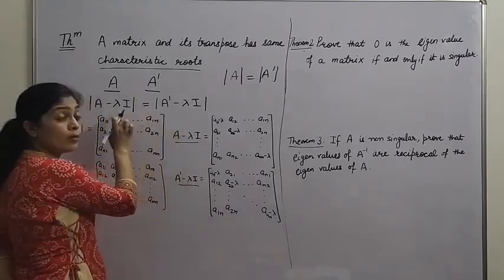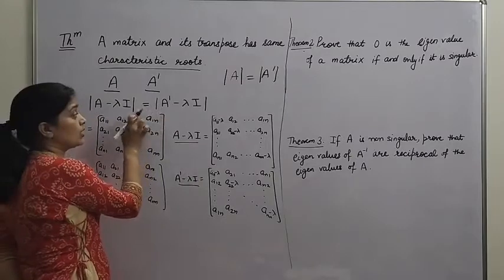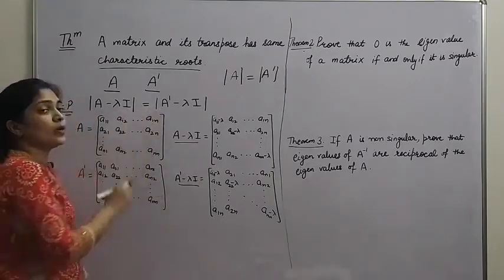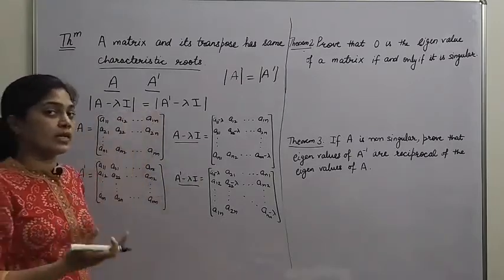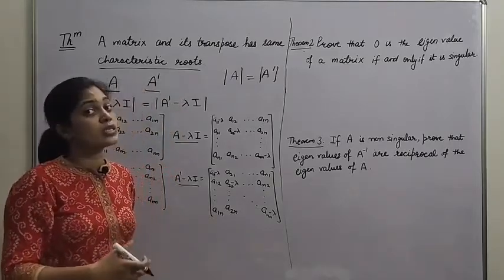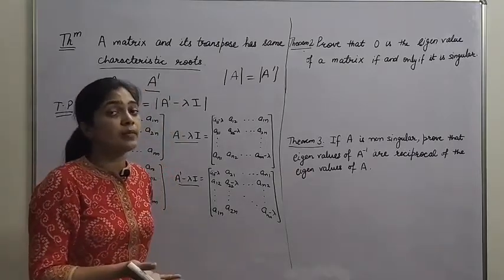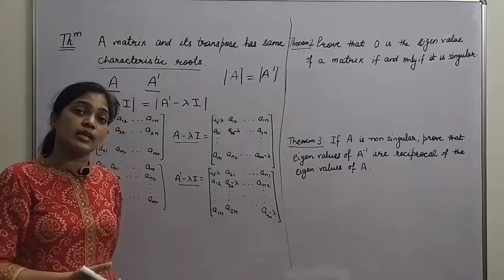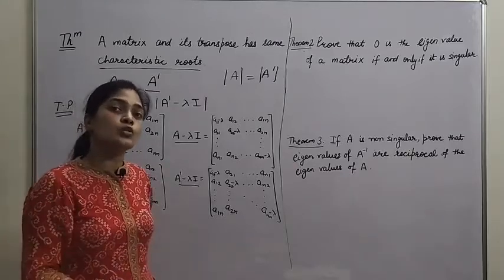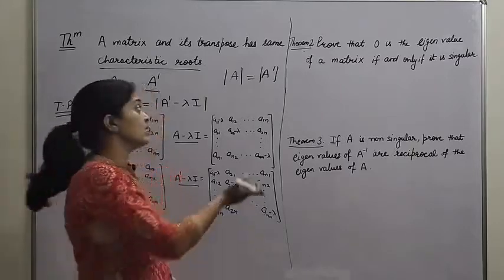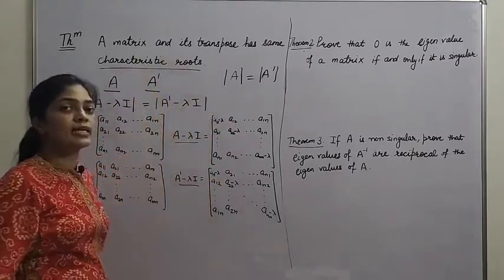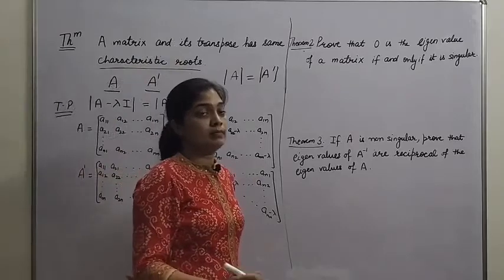This is what we had to prove. Since the characteristic polynomial is the same, that means the characteristic roots are also the same. This proves that a matrix A and its transpose have the same characteristic roots.